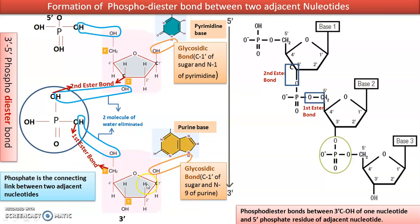If we take this nucleotide, it already has one ester bond. So the previous nucleotide, when connecting to this nucleotide, makes another ester bond between the other hydroxyl group of the phosphate and the third hydroxyl group at the third carbon. That becomes the second ester bond. The first ester bond is already there in the nucleotide, and the second ester bond connects the first nucleotide to the second — making it a phosphodiester bond.